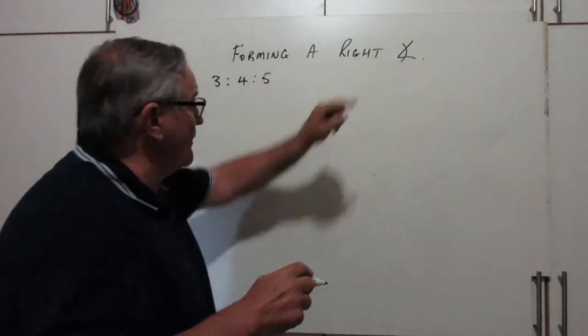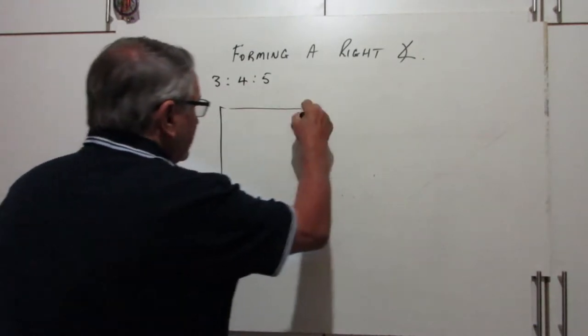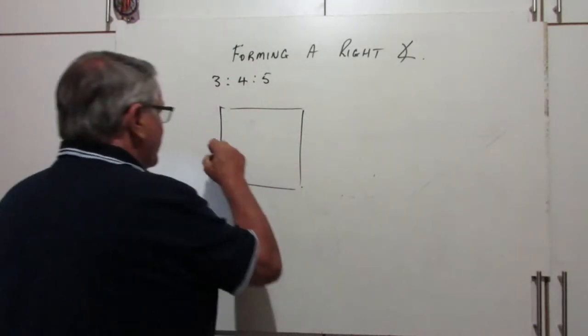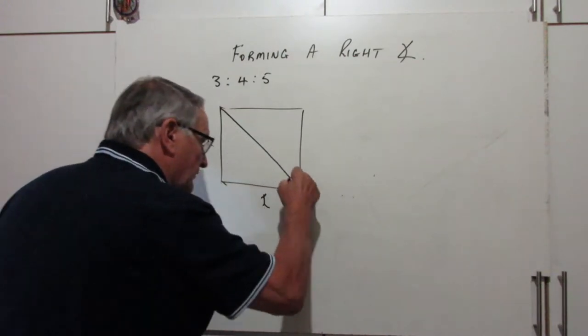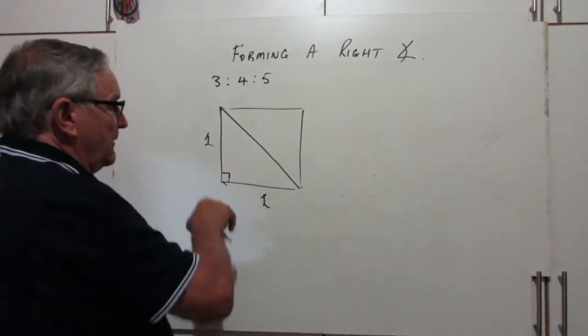So another way of forming a right angle is to look at a square. A square of side 1 unit and 1 unit and the diagonal of that square. Now it's a square, so we know that's a right angle.